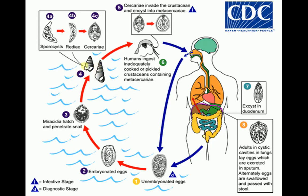Miracidia penetrate the snail and convert to larval stages: sporocyst, first generation of redia, second generation of redia, then converts to the larval stage cercariae. These cercariae leave the first intermediate host and swim to find the second suitable intermediate host — crustaceans such as crayfish or crabs — and the life cycle repeats.